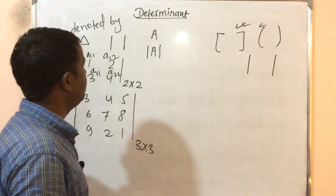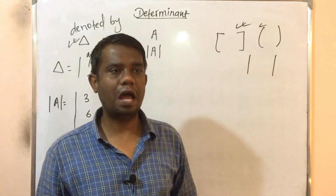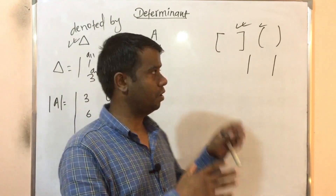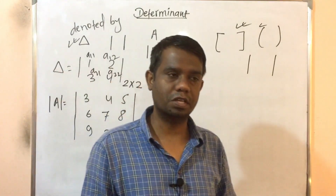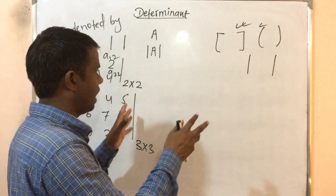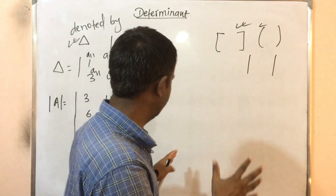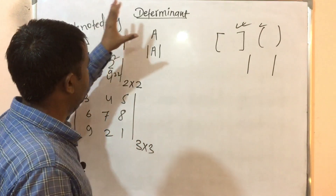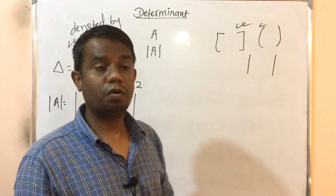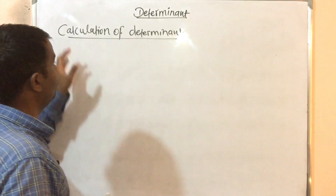Why is the determinant important? The determinant is used to find the inverse of a matrix. It is also used to solve two or more than two linear equations. So the determinant is an important concept. We will see notation first — the notation of determinant — and then move to calculation of the determinant for two by two and three by three matrices.